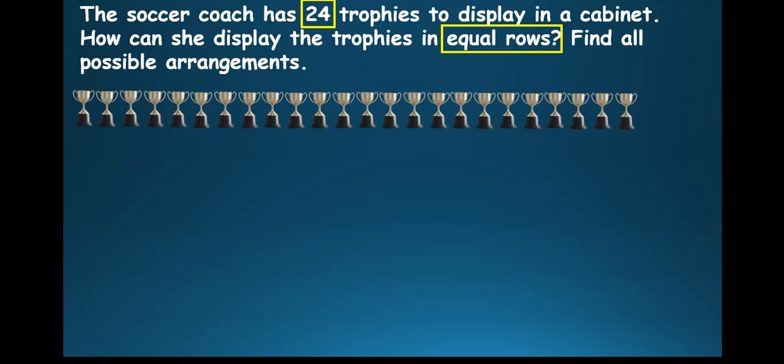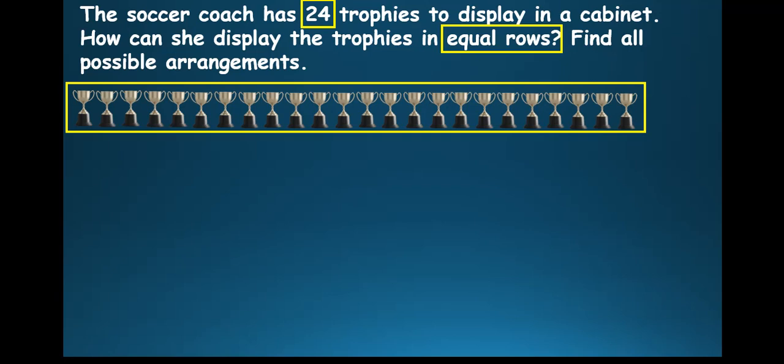So how do we do this? So these are the 24 trophies. And in this way, they are arranged in a single row in the cabinet. So we can say that's just one row. So this is one row, and in this one row, how many trophies do we have there? It's 24. So we can write it as one row of 24.